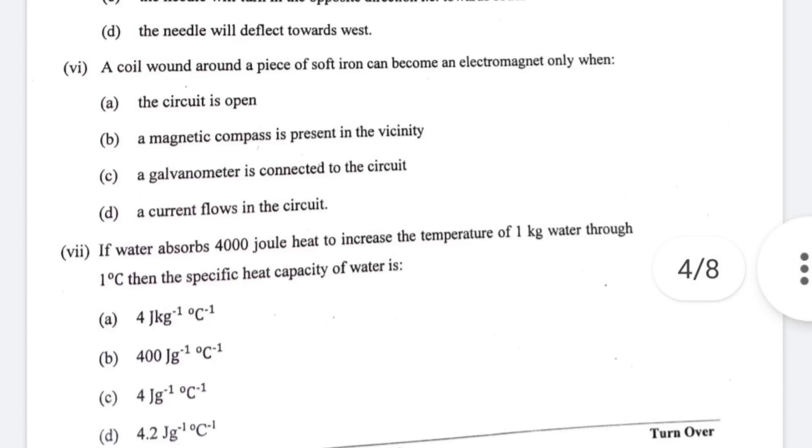The seventh question, the correct option is C, four joules per gram per degree Celsius.